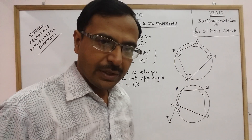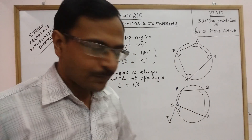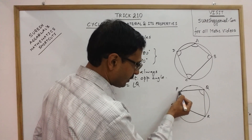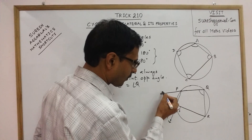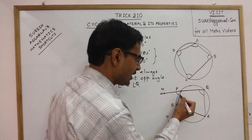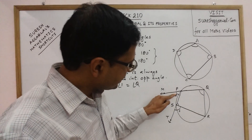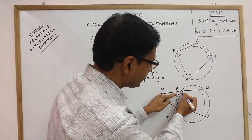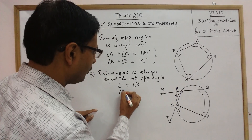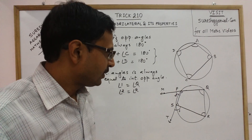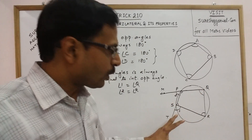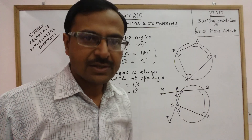Now suppose we produce another side — side QP extended to a point M. Another exterior angle, angle 2, is formed. This exterior angle has angle Q adjacent to it, so the opposite angle will be angle R. Therefore angle 2 equals angle R. Likewise, you can make two more exterior angles by producing different sides, and the same property will apply to those exterior angles as well.